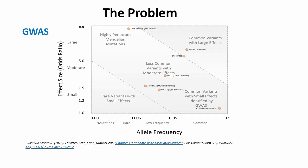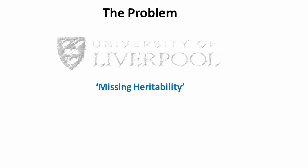However, variants account for only a fraction of the total genetic contribution to a trait when compared to twin studies. For example, genome-wide association studies have identified 50 variants influencing height that account for 5% of phenotypic variation. But twin studies indicate that genes account for 80% of this variation. This gap between 5% and 80% is known as missing heritability.